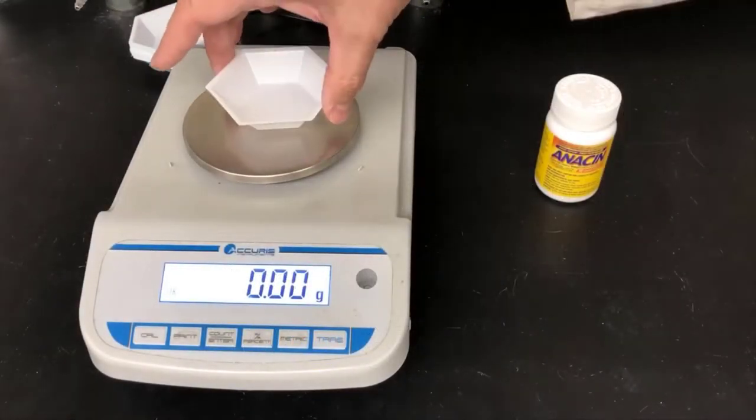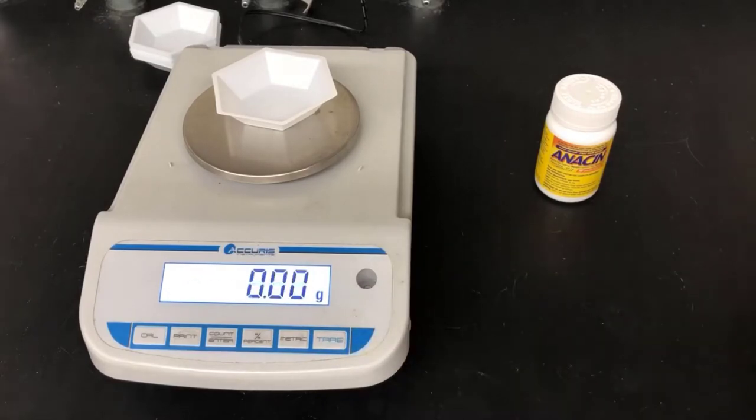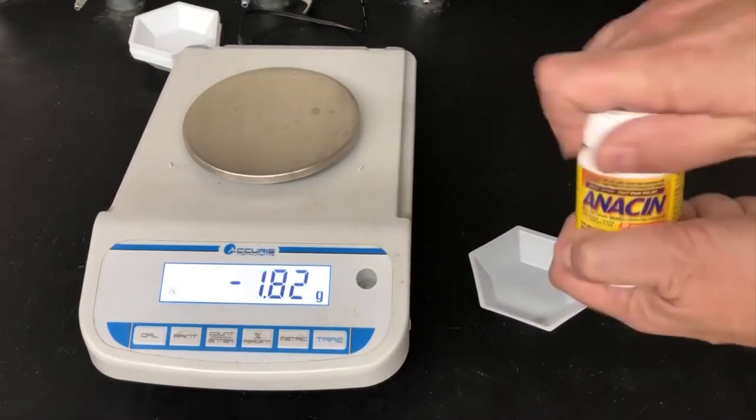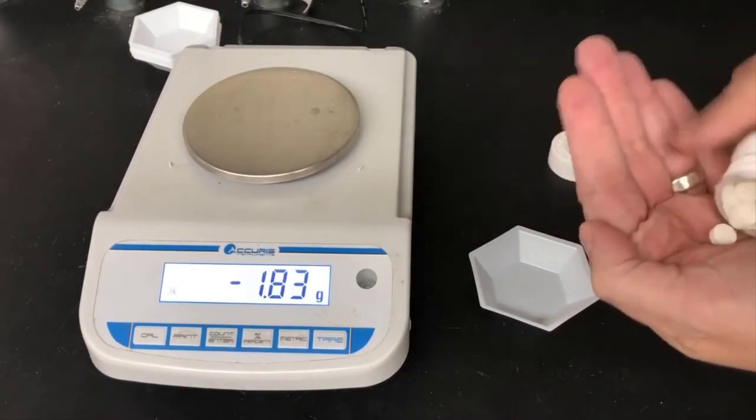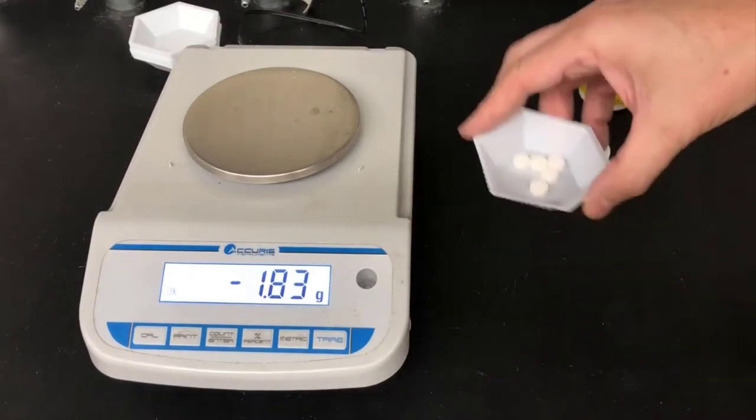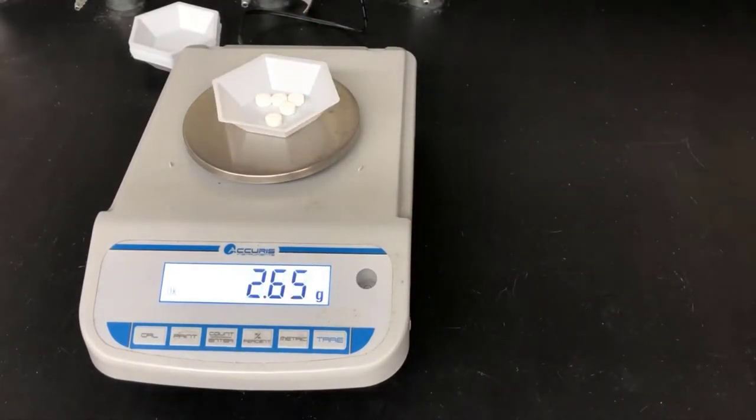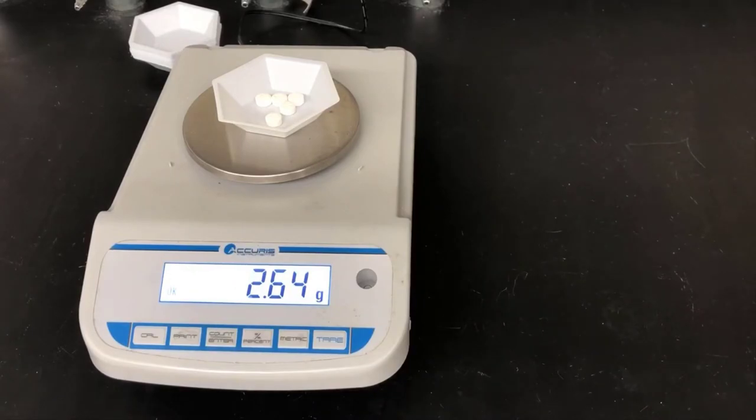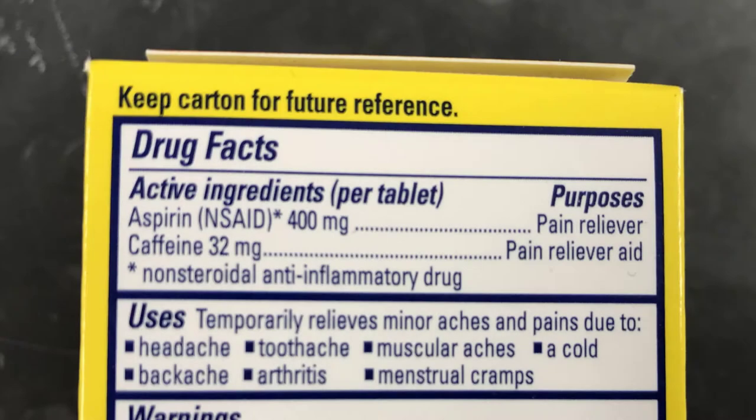Anacin is an over-the-counter pain reliever that contains aspirin and caffeine as active agents and also a binder to hold the pill together. The first thing that we'll do is weigh out 5 tablets of Anacin and record the mass. Here's a description of the active ingredients and their amounts in each tablet. We'll need to know this in the later part of the experiment where we calculate yields recovered of each.